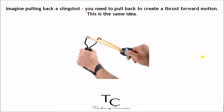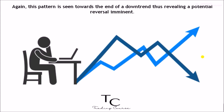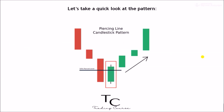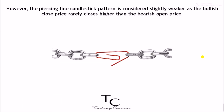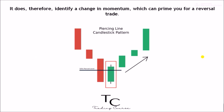This is the same idea. Again, this pattern is seen towards the end of a downtrend, thus revealing a potential reversal imminent. As you can see here, it is slightly different from the engulfing bar, but both provide the same signal. However, the piercing line candlestick pattern is considered slightly weaker, as the bullish close price rarely closes higher than the bearish open price.